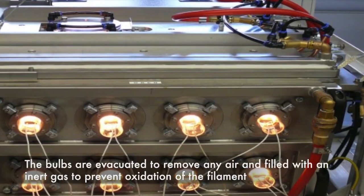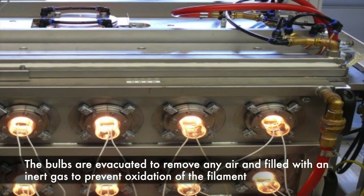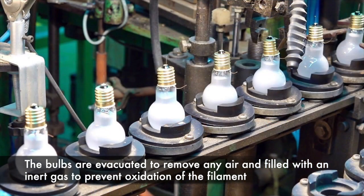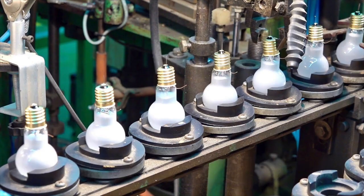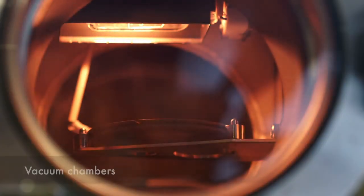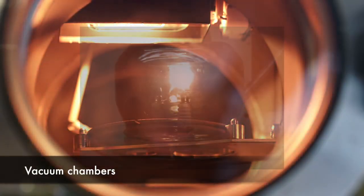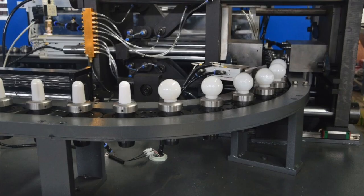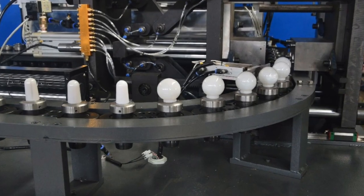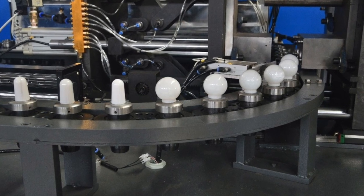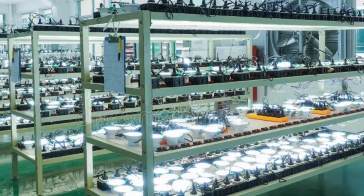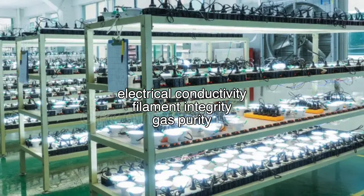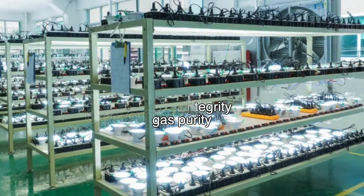Next, the bulbs are evacuated to remove any air and filled with an inert gas to prevent oxidation of the filament. This process is performed in vacuum chambers to ensure purity and consistency. Once the bulbs are sealed, they undergo rigorous testing to ensure they meet quality standards. This includes checks for electrical conductivity, filament integrity, and gas purity.